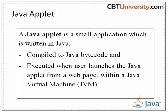Java applets are usually written in Java, but other languages such as Jython, Zero B, Pascal, etc. may also be used. Java applets run at very fast speeds compared to JavaScript. Unlike JavaScript, Java applets had access to 3D hardware acceleration, making them well suited for non-trivial computation-intensive visualizations.